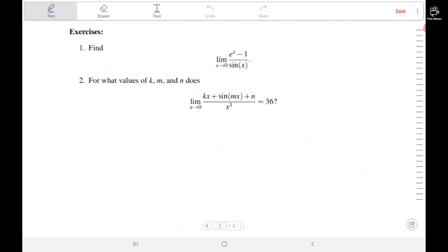I'd like to leave you with a couple of exercises. The first is an example of using L'Hopital's rule. The second is similar to what we did in this video: a limit involving k, m, and n as arbitrary values, and the goal is to find the values that make the limit equal 36. If you have questions, feel free to come to office hours or discuss on Piazza. Thank you.